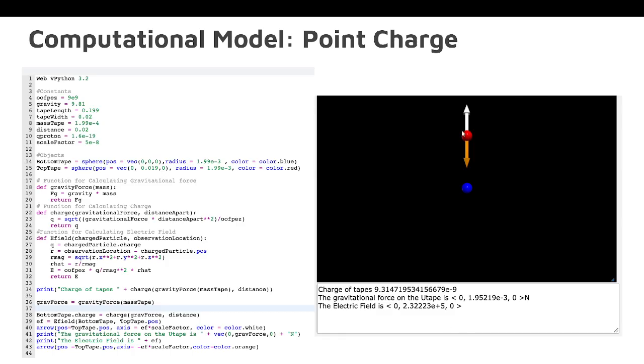The computational model, for the point charge, the first thing that we had to do is define all the constants, and then what our code does is we create this output, which has red on top, which is a top tape, and blue is the bottom tape, and then we have two arrows from the red sphere which are equal, which means that the sphere is in equilibrium.